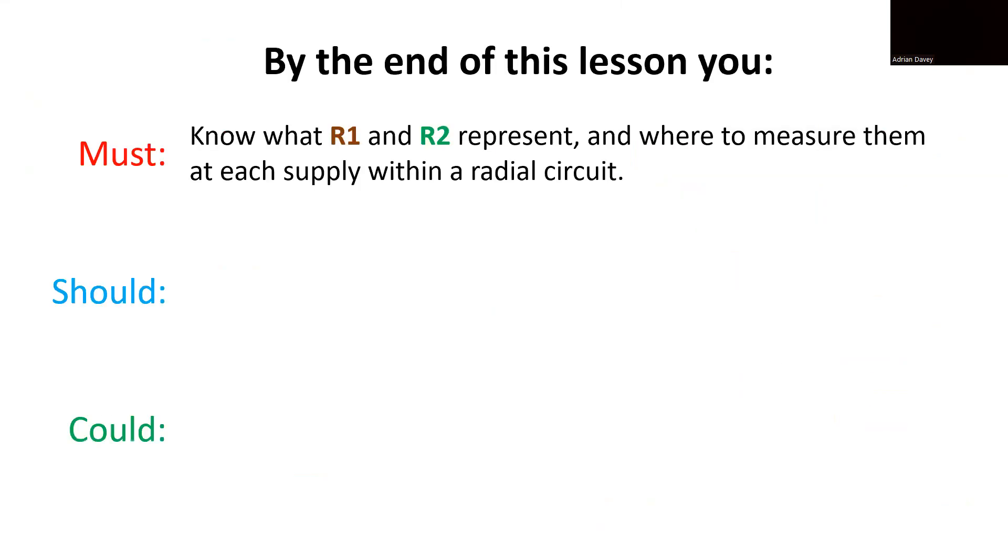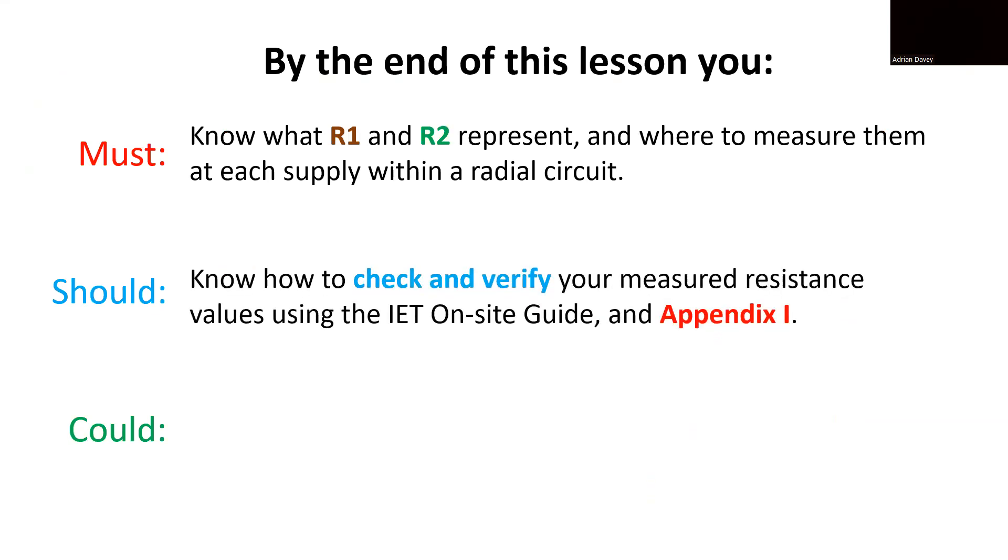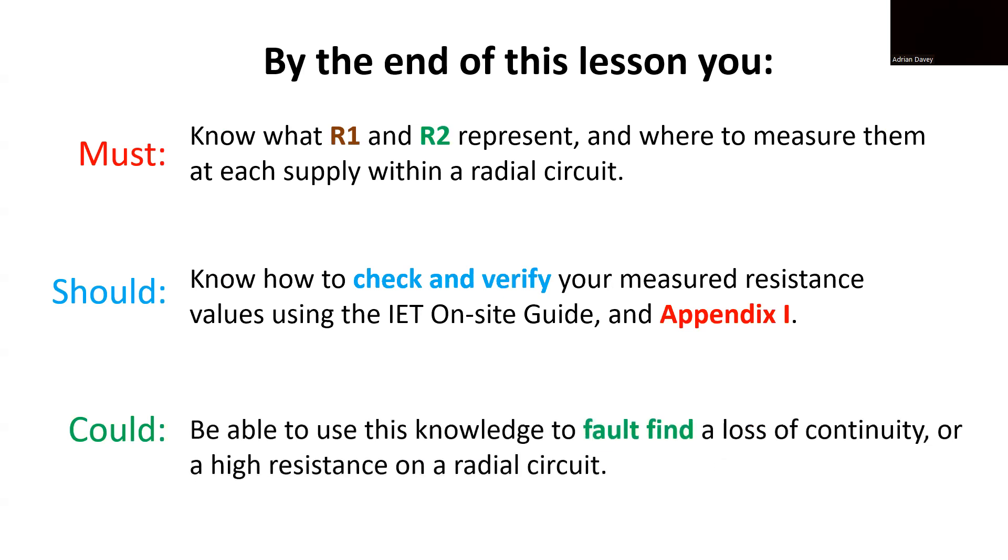By the end of this lesson, you must know what R1 and R2 represent and where to measure them for each supply within a radial circuit. You should know how to check and verify your measured resistance values using the IET on-site guide in appendix I, and some of you could be able to use this knowledge to fault-find a loss of continuity or a high-resistance fault on a radial circuit.